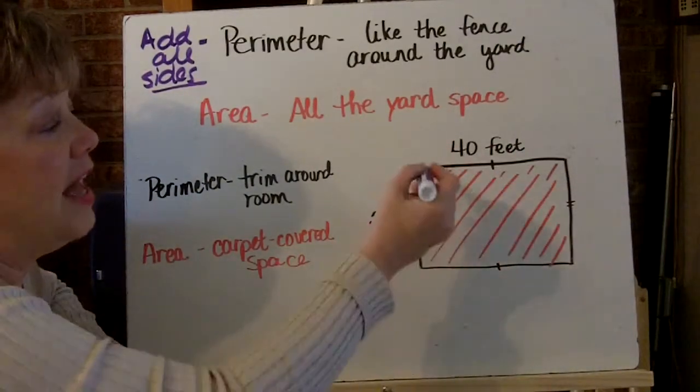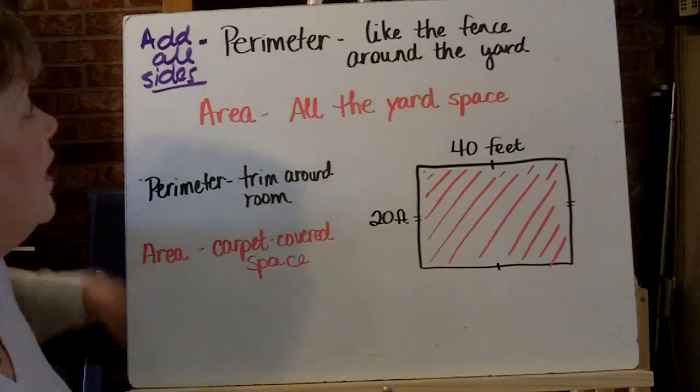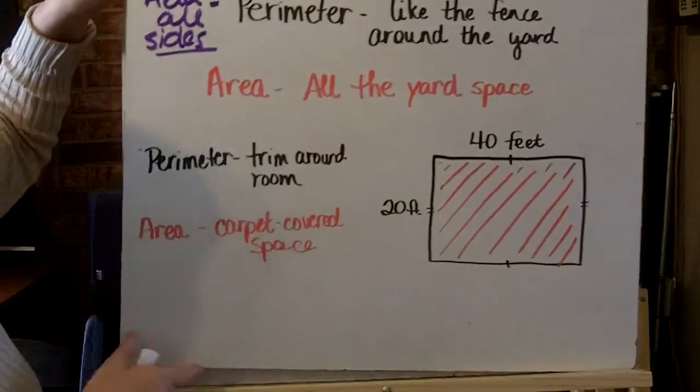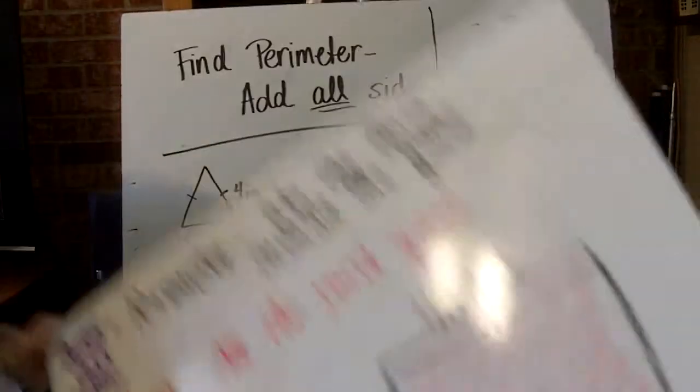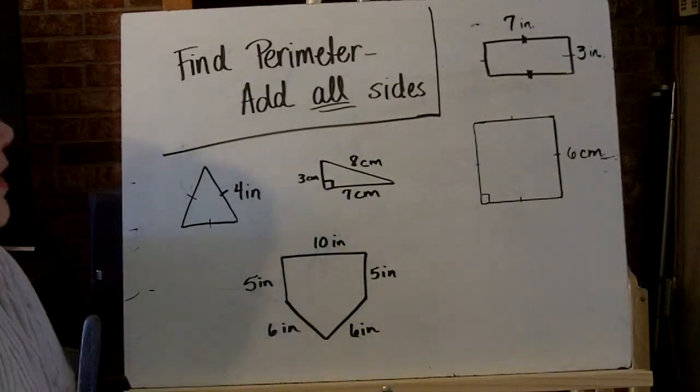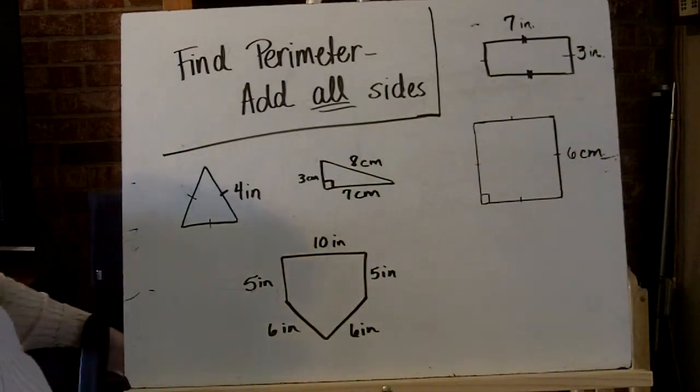Again, the area is the outside edge. And to find the area, you simply add all the sides. We're going to look at a couple of examples. And there's a reminder right here at the top to find the area you add all the sides.